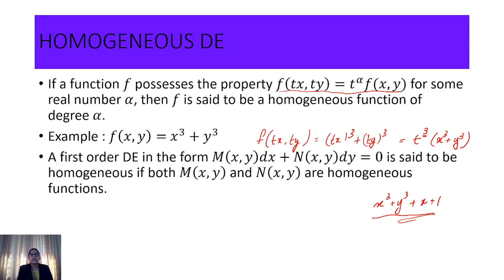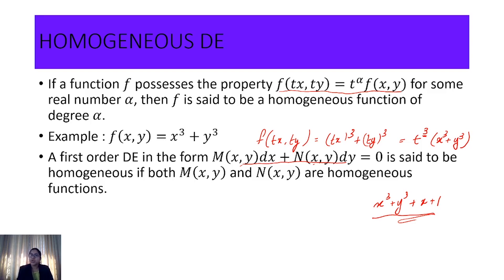Now, how can we tell whether a differential equation is homogeneous or not? The general form we consider is M(x, y)dx + N(x, y)dy = 0. A first-order differential equation in this form is said to be homogeneous if both functions M and N are homogeneous functions of the same degree.